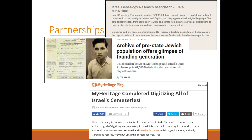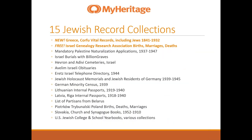On IGRA's paid database there is an index in Hebrew and English, but they don't show the images like MyHeritage does. In order to search databases on IGRA, you have to be current with paying annual membership dues. On MyHeritage, across the top in the tab section, you can use the drop-down menus and find something called the Collections Catalog. If you search in the Collections Catalog, you find 15 Jewish record collections of significant interest.